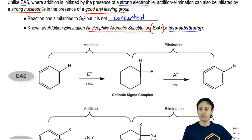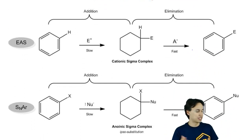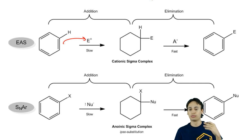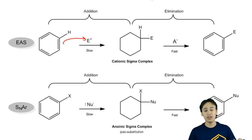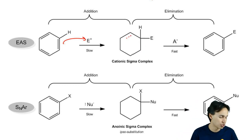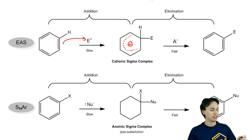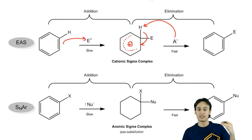Let's quickly remind ourselves of EAS so you can see how SNAr is similar and different at the same time. Remember that your first step is always the slow step to create the sigma complex. This is a cationic sigma complex because you get a positive charge distributed throughout the entire ring — we can draw that as a dotted line with a positive in the middle. After the resonance structures, you get an elimination step, a beta elimination where you grab an H, reform the double bond, and get a substitution product started by an electrophile — so EAS.